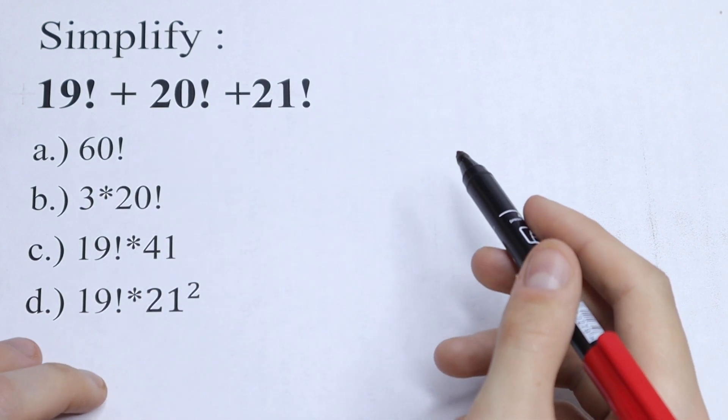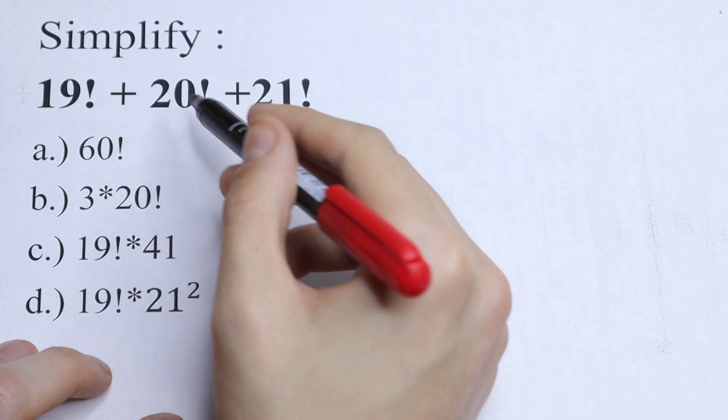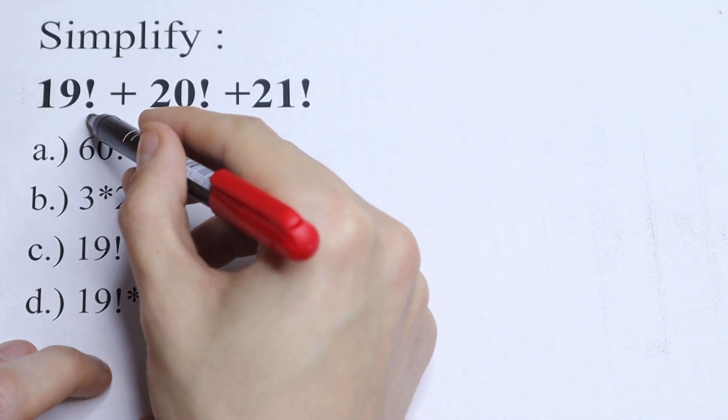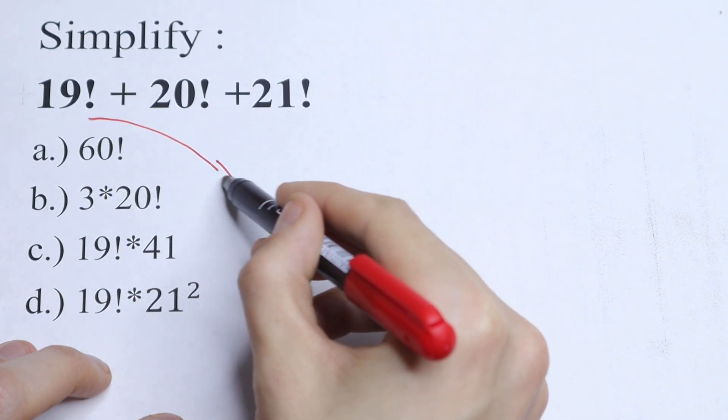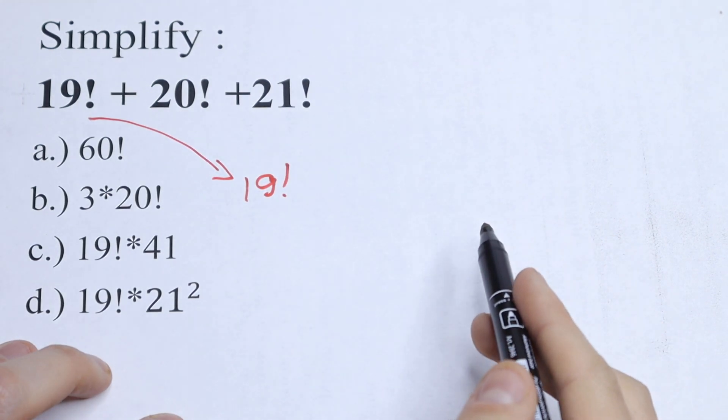So what are we going to do? Let's simplify this a little bit. We all know that 19 factorial can be written as 19 factorial as well, so let's write this 19 factorial right here.